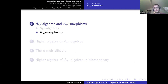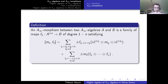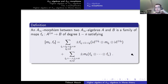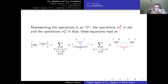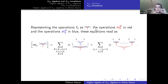For morphisms between A-infinity algebras: an A-infinity morphism will again be defined as a collection of arity-n maps, this time going from A tensor n to B and having degree 1 minus n — so before my higher multiplications had degree 2 minus n, now I have degree 1 minus n. If I represent my operations Fn of arity n as two-colored corollas, where A lies above the blue entries and B lies below the red outgoing edge, and the operations of A-infinity algebra B as red corollas and those of A as blue corollas.